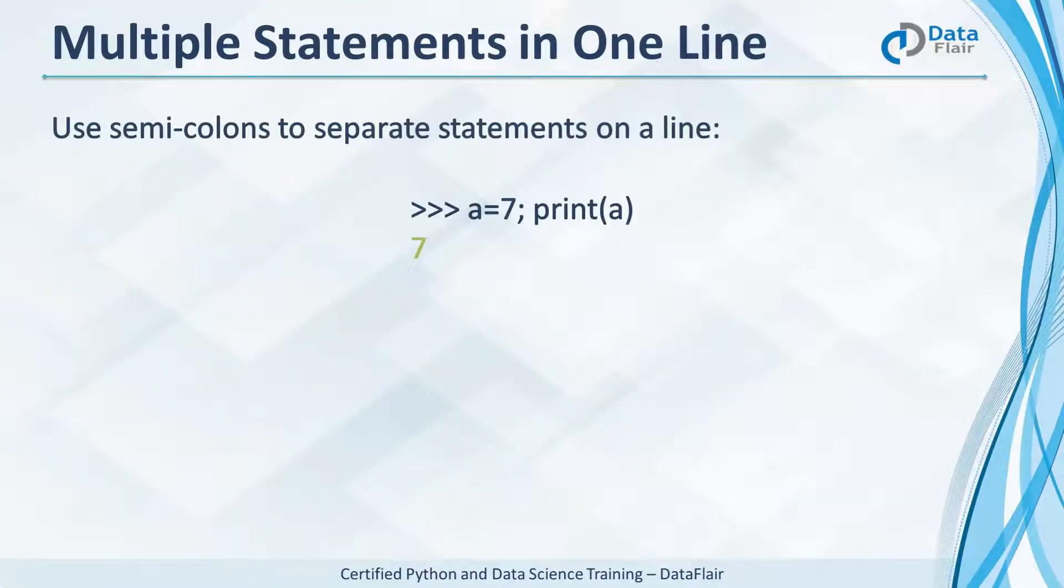Here we use semicolons to separate statements on one line. So we put two statements on one line here. And here we put an if statement in one line because there's just one line of code to execute under it.